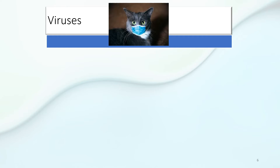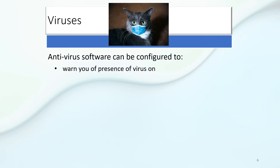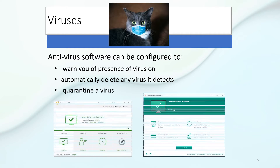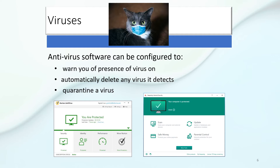So we want to know how to avoid viruses. If you have antivirus software — and remember that Windows 10 comes with a Defender program that has an antivirus in it — it should be configured to warn you of the presence of a virus, automatically delete any virus it detects, and quarantine a virus. To quarantine a virus means it gets set aside into a safe place in your computer where it can't do any harm, and then once you know it's fine, you can take it out of quarantine.